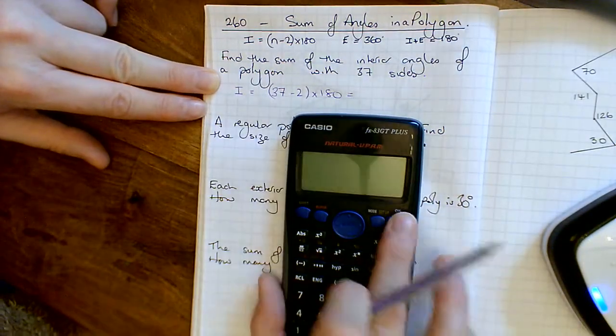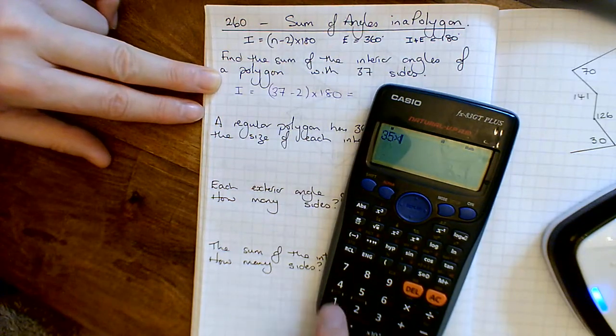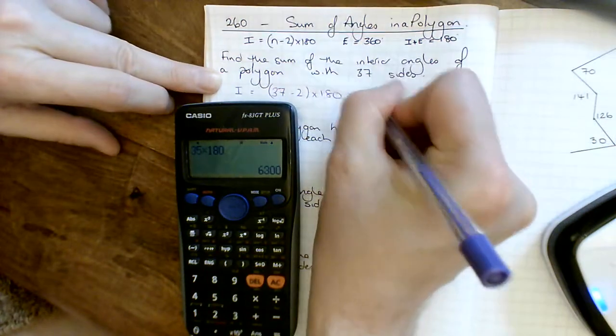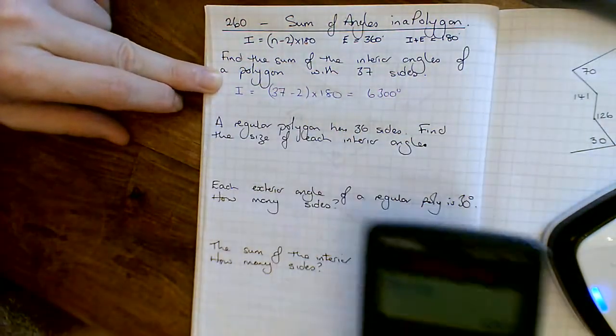So 37 take away 2 is 35, I can do that in my head. So 35 times 180 is 6300, so that's what those angles add up to, 6300 degrees.